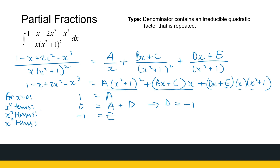Looking at x squared terms: on the left I've got 2x squared. On the right, the first term gives 2Ax squared, the second term gives bx squared, and the third term gives dx squared. So 2A plus b plus d equals 2. With A equals 1 and d equals minus 1, we get 2 plus b minus 1 equals 2, so b equals 1.